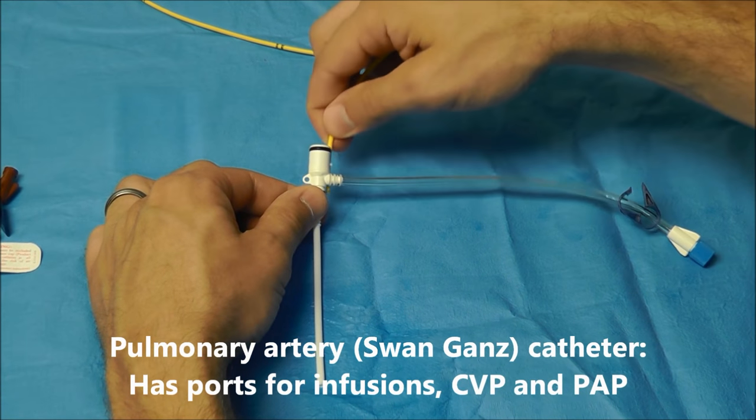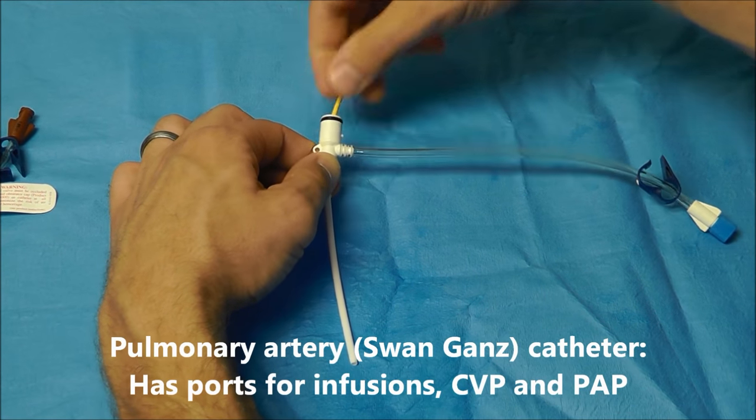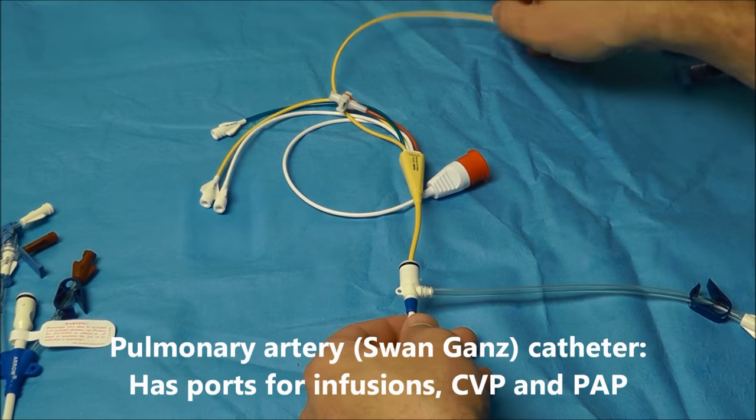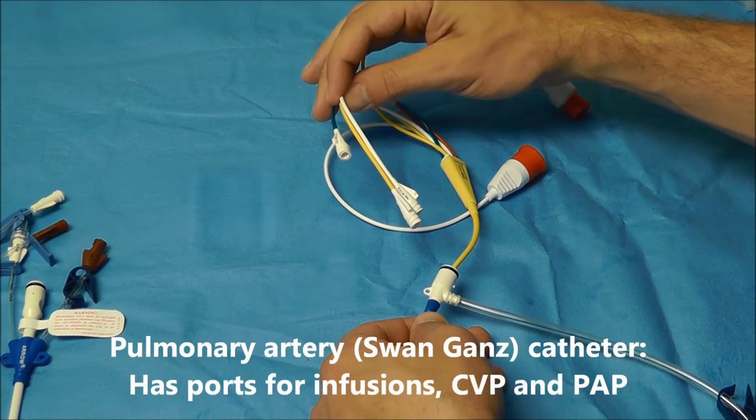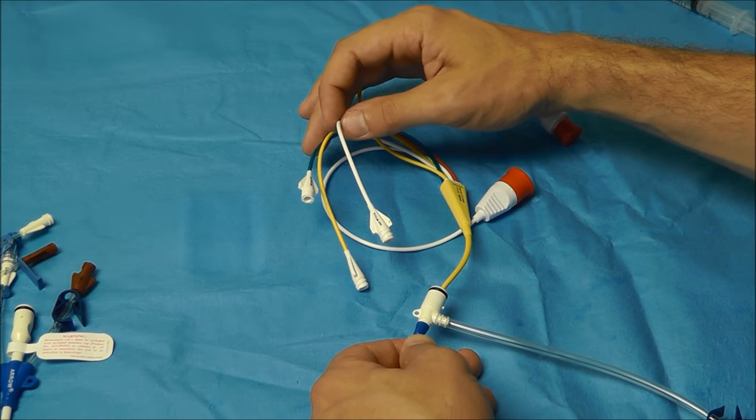And then the last way to overcome your lack of ports is to insert a pulmonary artery catheter. And you can see when this pulmonary artery catheter is inserted, you've got multiple ports for which to use for infusions and monitoring vascular pressures.